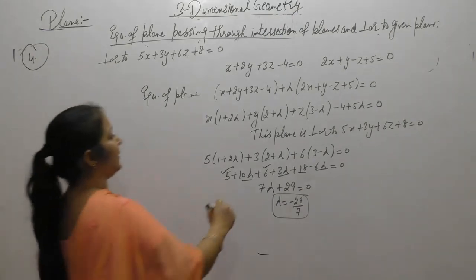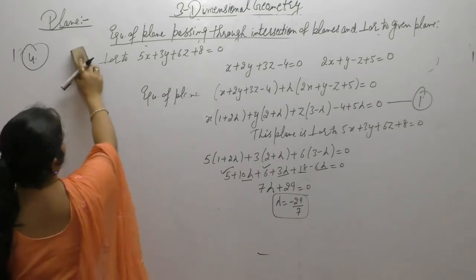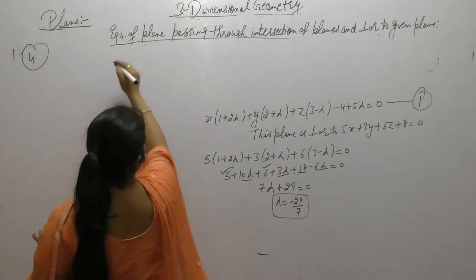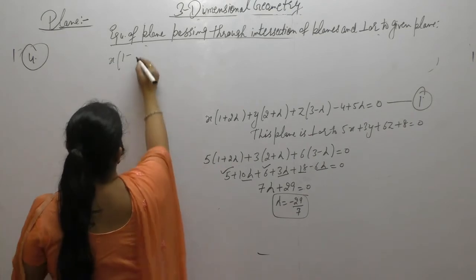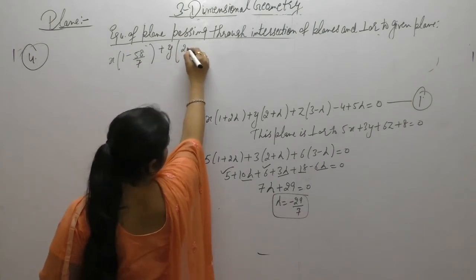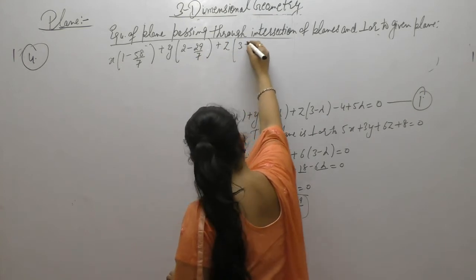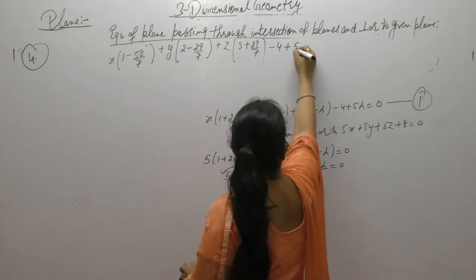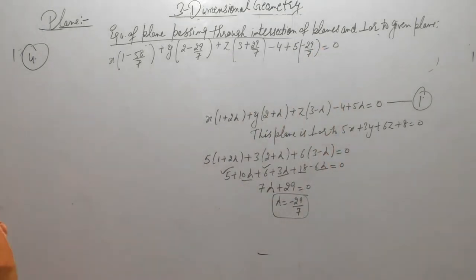Now we put this value of lambda into the plane equation. Substituting lambda equals minus 29 by 7: x times (1 minus 58 by 7) plus y times (2 minus 29 by 7) plus z times (3 plus 29 by 7) plus (minus 4 plus 5 times minus 29 by 7) equals 0.